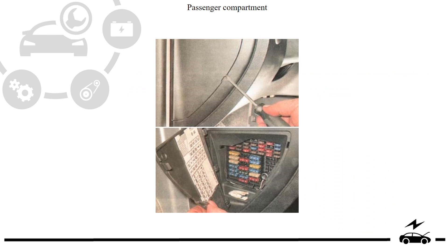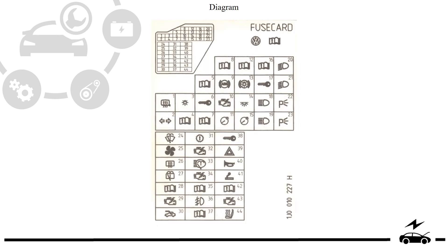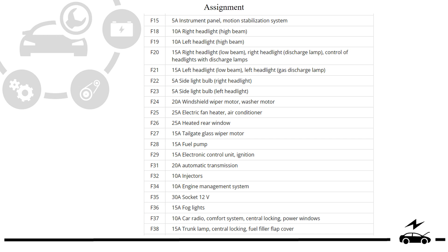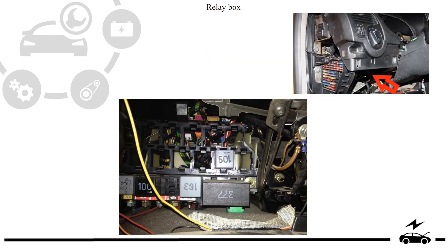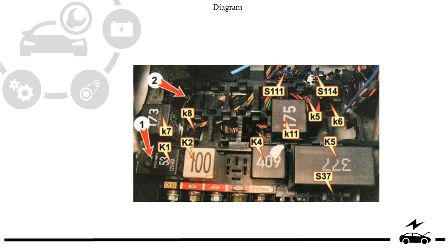Passenger compartment fuse box: location, diagram, assignment. Relay box: location, photo, diagram.